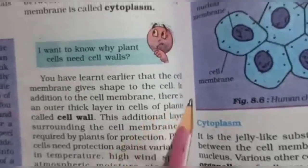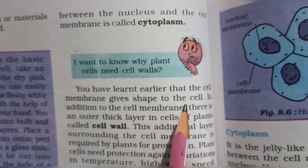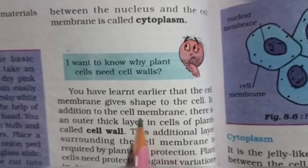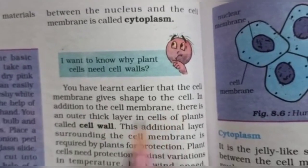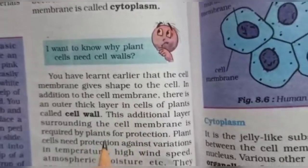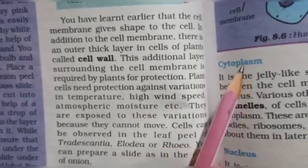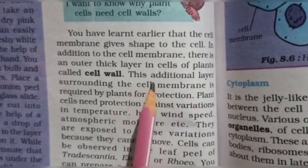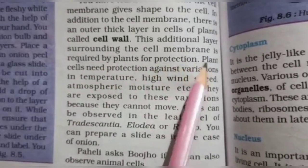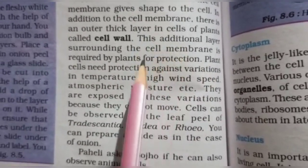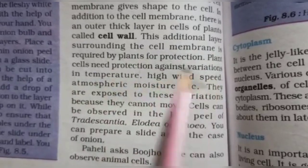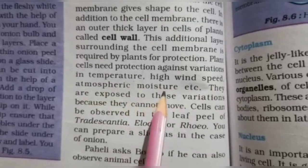You have learned earlier that the cell membrane gives shape to the cell. In addition to the cell membrane, there is an outer thick layer in plant cells called the cell wall. The cell wall is required by plants for protection. Plant cells need protection against variations in temperature, high wind speed, atmospheric moisture, and so on.